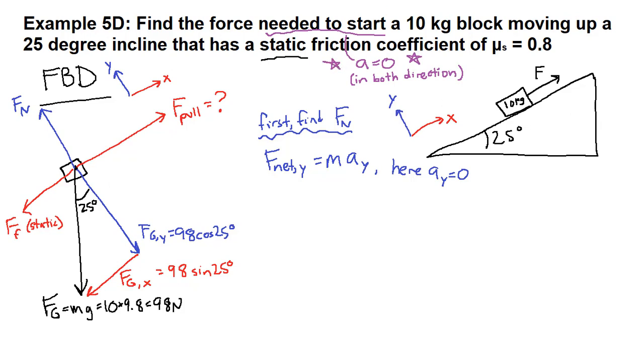Back to where we were in the y direction. We have the normal force minus the force of gravity in the y direction, and that equals zero in this case. And so the normal force is equal to 98 cosine 25 degrees. And I'll go ahead and calculate that.